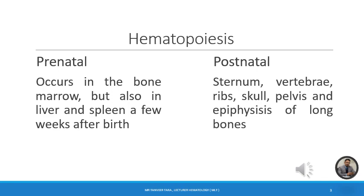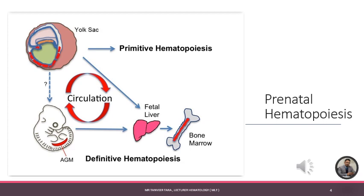In very early fetal and embryonic life, cells responsible for hematopoiesis appear in the yolk sac around the third week of gestation. These stem cells are responsible for the formation of WBCs, RBCs, and platelets. During the gestational period, erythropoiesis, leukopoiesis, and thrombopoiesis all occur simultaneously in the yolk sac.